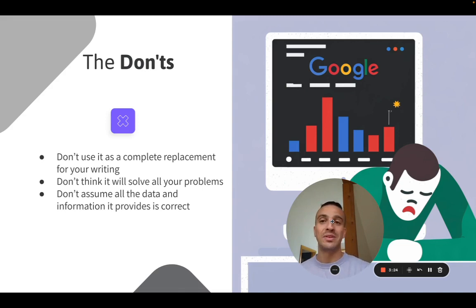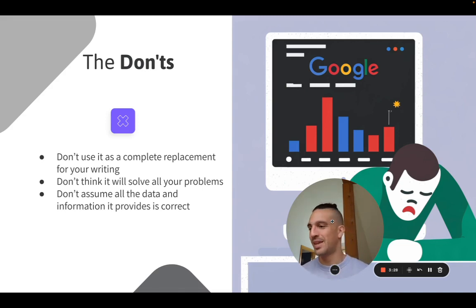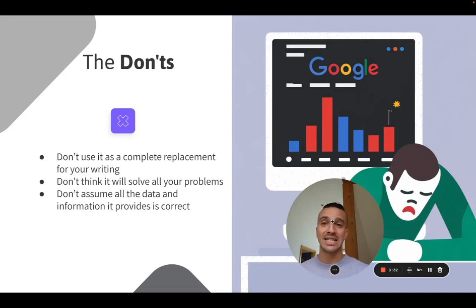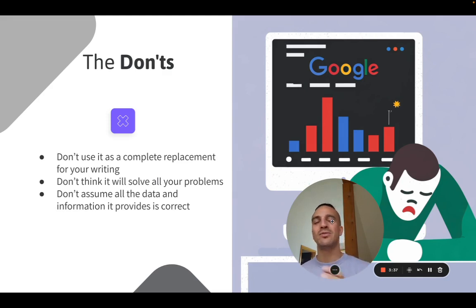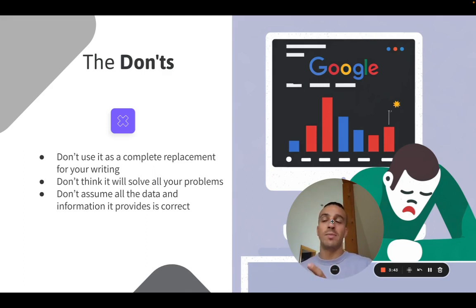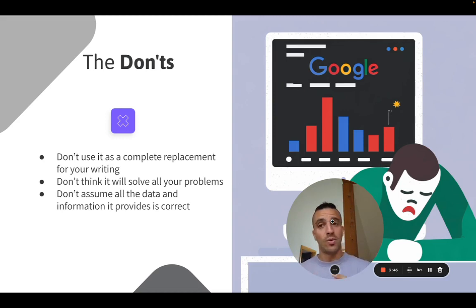Don't assume this thing is going to solve all your problems — it will solve a fair few of them, but not all of them. And most importantly, don't assume that all the data and information that it provides you is correct. It does get a bit confused sometimes. And remember, this language model has only been trained on all the information up until 2021. So if you want more up-to-date information, just double-check what it's giving you.